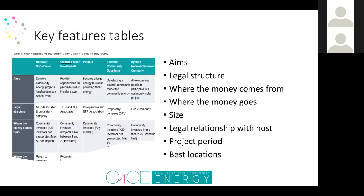One of the things included in the guide, now expanded to include new models, is the key features table. Across two pages in a simple table structure, we're able to compare all of these models covering off the main categories as rows. If you want a really quick summary, you can jump to this part of the document and rapidly understand the key features of each project. This guide isn't necessarily intended to be read in a linear way — you may want to jump to a particular case study or to the legal structures section to rapidly skill up before coming back to the case studies.